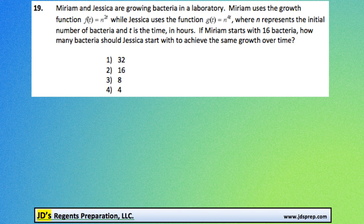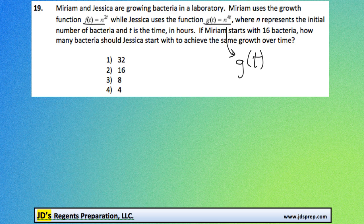Miriam uses the growth function f(t) = n^(2t), while Jessica uses the function g(t) = n^(4t). Where n represents the initial number of bacteria, and t is the time in hours.